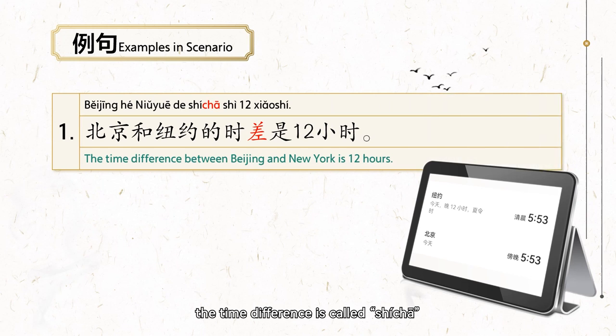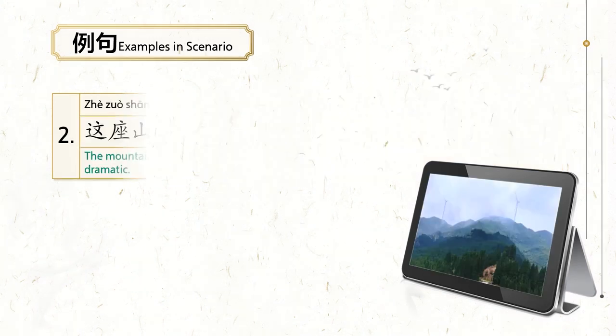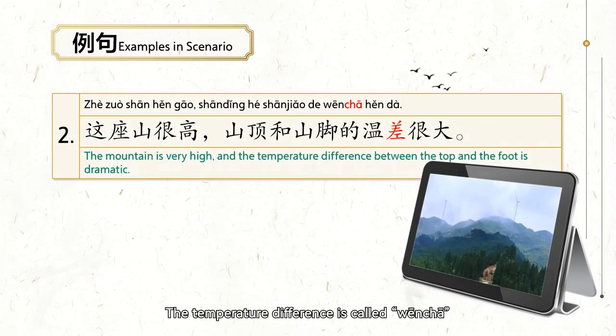For example, the time difference is called 时差. 北京和纽约的时差是12小时.